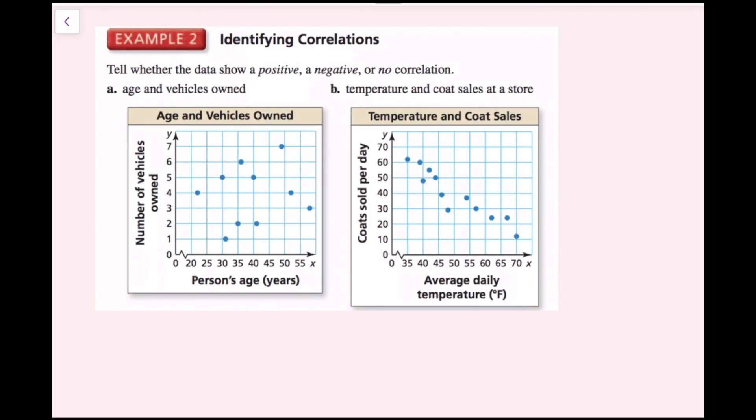For Example 2, tell whether the data shows a positive, negative, or no correlation. For Part A, it's age and vehicles owned.